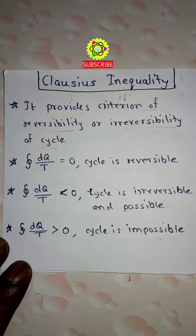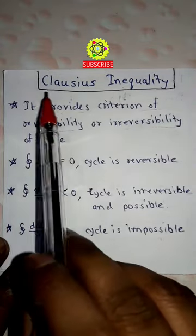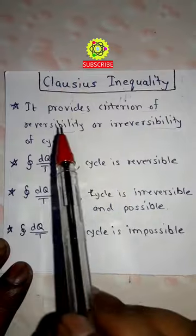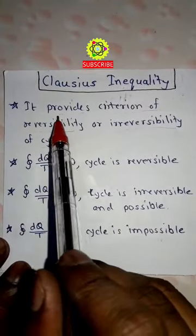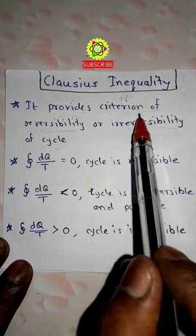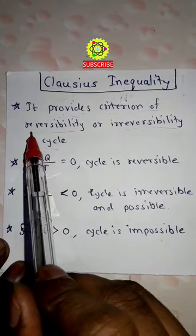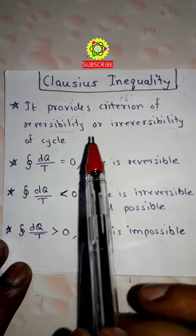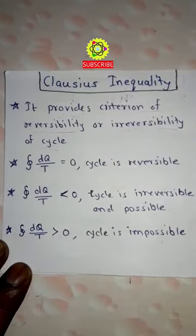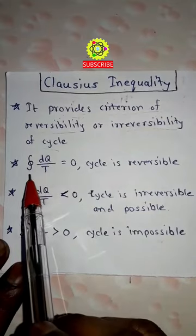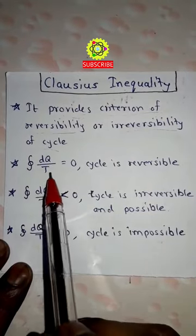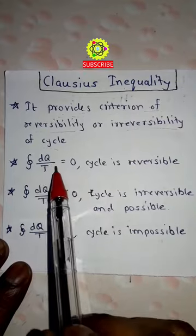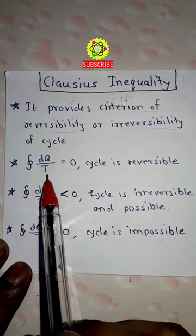Hi students, welcome. Here we have the Clausius inequality. The Clausius inequality provides a criterion for irreversibility and reversibility of a cycle. The cyclic integration of dQ upon T is shown here, where dQ is heat transfer and T is the absolute temperature.